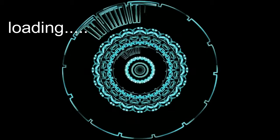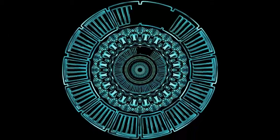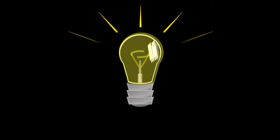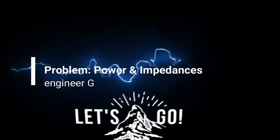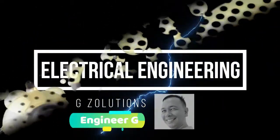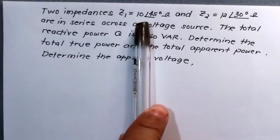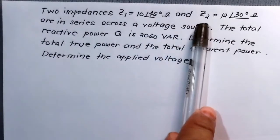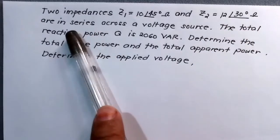Hello friends, welcome again to this channel. This is G Solutions — we find solutions for your needs. The problem is about impedances. We have two impedances: Z sub 1 which has a value of 10 Cis 45 degrees ohms, and Z sub 2 equals 12 Cis 30 degrees ohms. These impedances are in series.